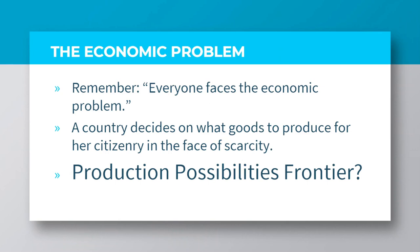Remember that in the previous lesson, you learned that everyone faces the economic problem, including individuals, businesses and governments. Let us categorically look at this economic problem from a country's perspective. A country decides on what goods to produce for her citizenry in the face of scarcity. So, this brings into the concept of production possibilities frontier.